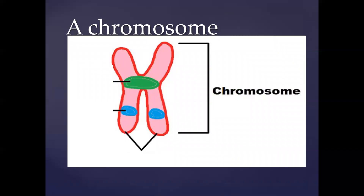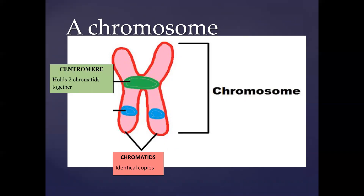If you zoom in to a chromosome, you find it is made up of two strands known as chromatids. These chromatids are identical copies of each other — the chromatid on the left has exactly the same genetic information as the one on the right, because they are the result of DNA replication where a copy was made. These two chromatids are joined by a centromere. The position of the centromere can vary — sometimes more central, sometimes towards the top or bottom — but it joins the two chromatids together.